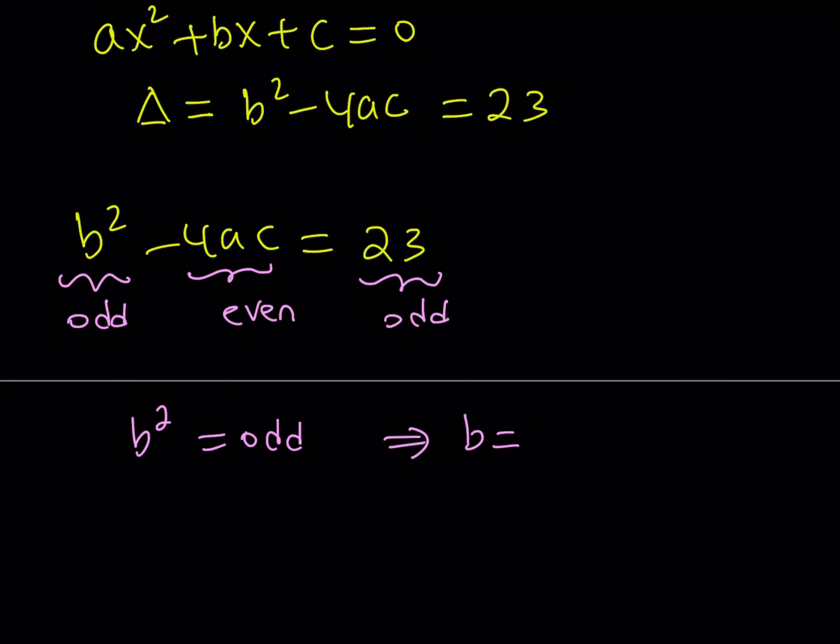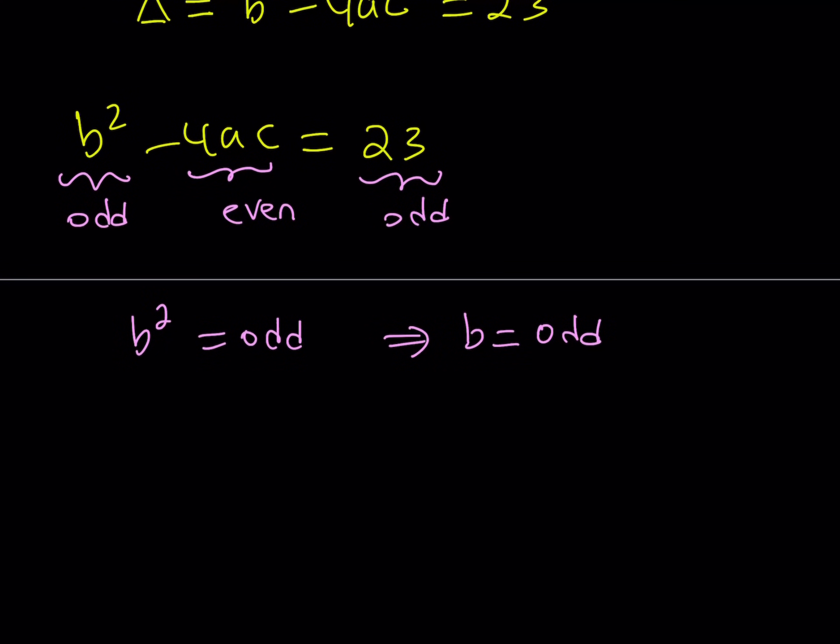Because if a number is not odd, like even, its square cannot be odd either. So we can prove by contradiction that this is impossible. So b needs to be odd as well, and that implies a very important result. This is actually the breaking point for this problem.